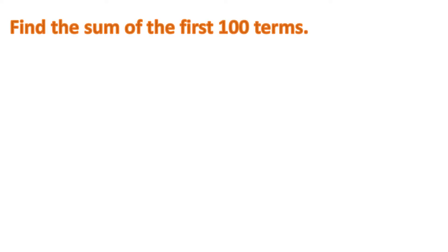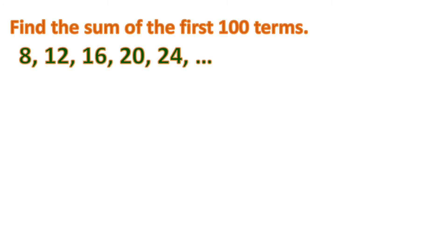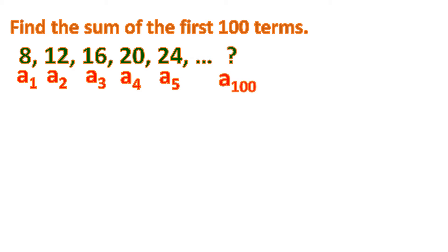So how about this? You are tasked to find the sum of the first 100 terms with the same given sequence. This is the first term up to the fifth term, and you are going to add from there up to the 100th term — and we don't even know what the last term is. So it takes a lot of time to do it manually, and the best way is to use the general formula for finding the sum of an arithmetic sequence.